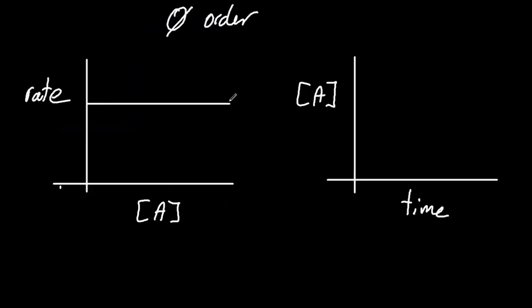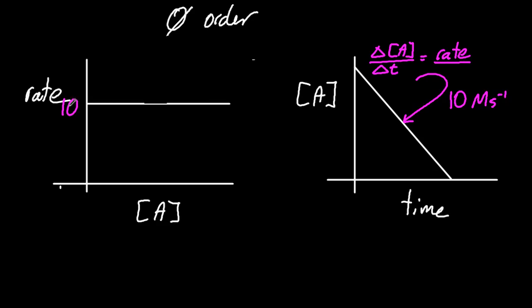So let's just have one more look at these. So that's the zero order. The two graphs you need for zero order. So looking at the right-hand graph, the rate is the slope. And let's say the slope is, I don't know, 10 molar per second. That's unchanging. The slope's unchanging. So on the left-hand graph, that's where the 10 is. And actually the rate constant is 10 as well.